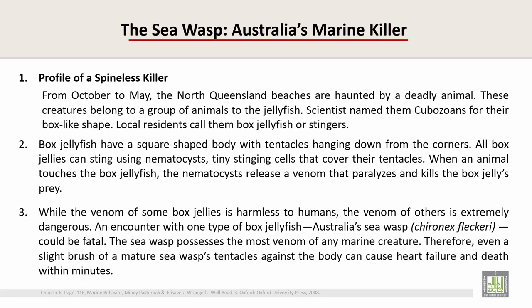'The Sea Wasp: Australia's Marine Killer' is the title of this text. Now read the first sentence in each paragraph and underline it. The first sentence in paragraph one is: 'From October to May the North Queensland beaches are haunted by a deadly animal.' The first sentence in paragraph two is: 'Box jellyfish have a square-shaped body with tentacles hanging down from the corners.'